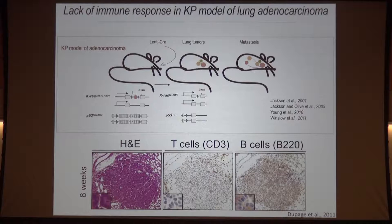In fact, if we try to develop tumors in animals lacking an immune system — lacking B cells and T cells, so-called rag mutant mice — the tumors develop equally well, not faster, not more extensively, equally well compared to wild-type mice. This is a suggestion, at least, that the immune system does not surveil the development of these genetically engineered models.